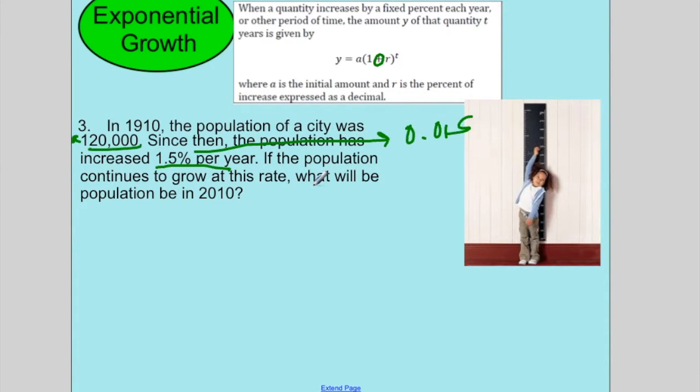Since then, the population has increased by 1.5% per year. So 1.5% is 0.015. If the population continues to grow at this rate, what will it be in 2010? So let's set this up. We would have y equals the amount we started with, 120,000, then my rate. So 1 plus this, I'm going to write it as 1.015 to the t.